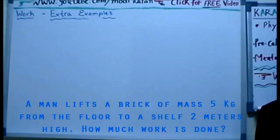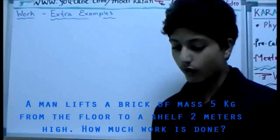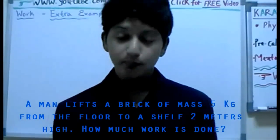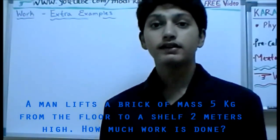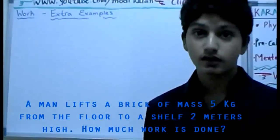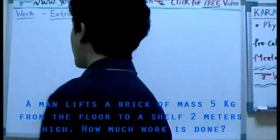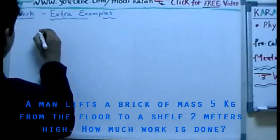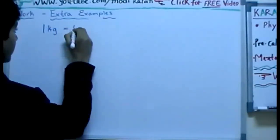The first question says that a man lifts a brick of mass 5 kg from the floor to the shelf 2 meters high. How much work is done? Well, the opposite force in this case is the weight of the brick. We should always know that 1 kg on the earth is equal to 10 newtons. That's the conversion factor that we use.